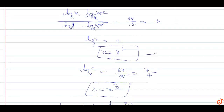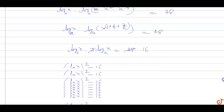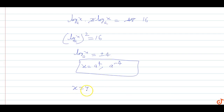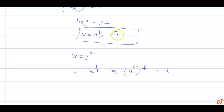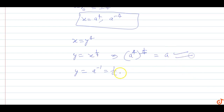Now substituting back: since x equals y to the power 4, we get y equals x to the power 1 by 4. When x equals a to the power 4, y equals a to the power 4 raised to 1 by 4, which equals a. When x equals a to the power minus 4, y equals a to the power minus 1, which equals 1 by a. So y equals a or 1 by a.